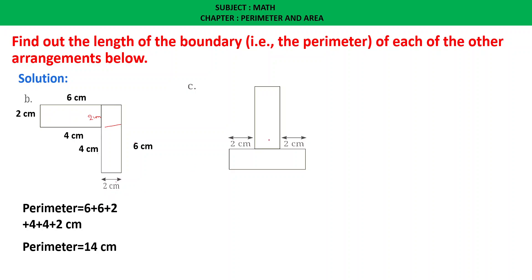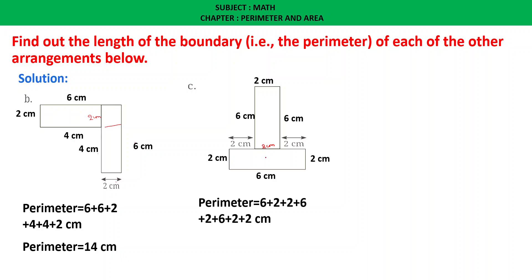For the second figure arrangement: sides measure 2, 6, 2, 2, 6, 2, 6, and 2 centimeters. Adding these: 6 plus 2 plus 2 plus 6 plus 2 plus 6 plus 2 equals 28 centimeters total perimeter.